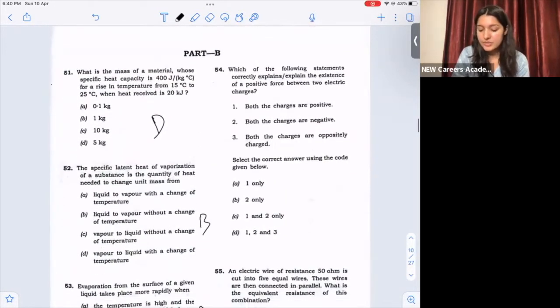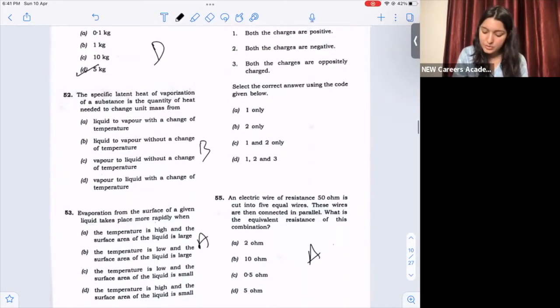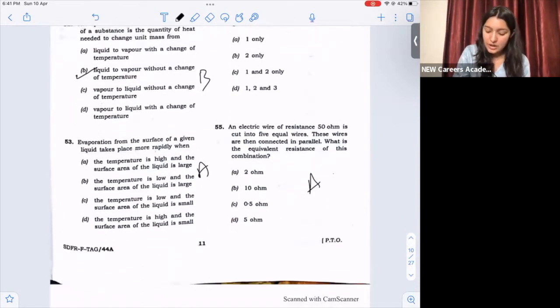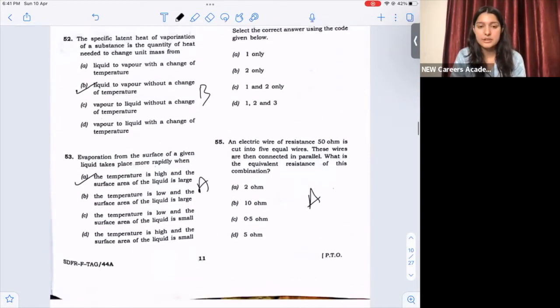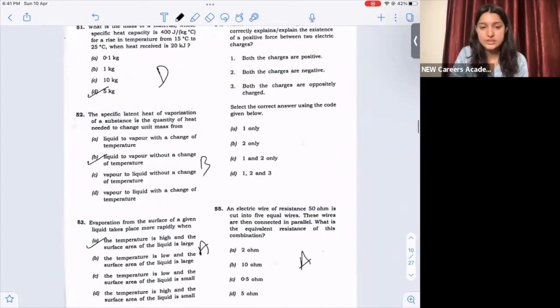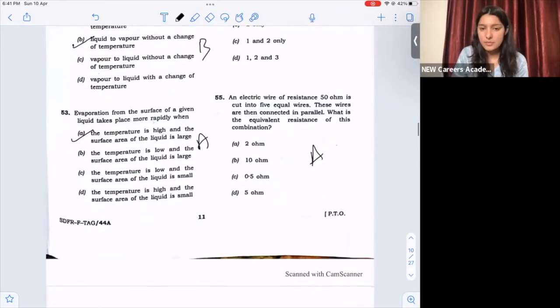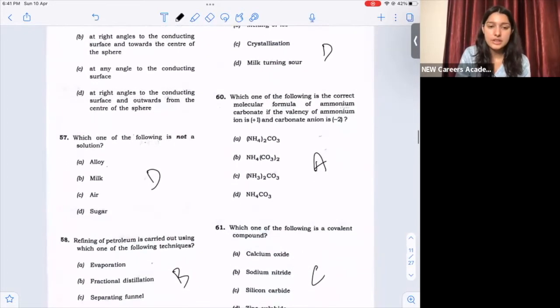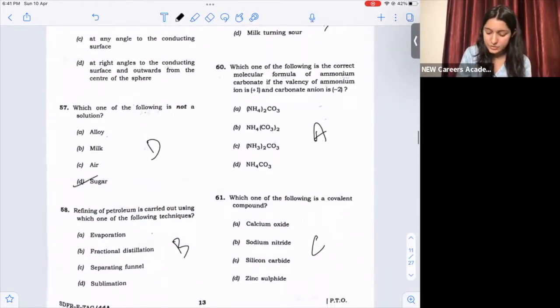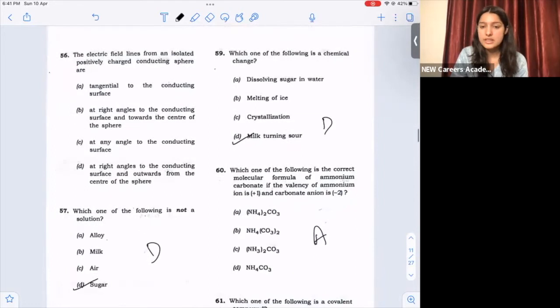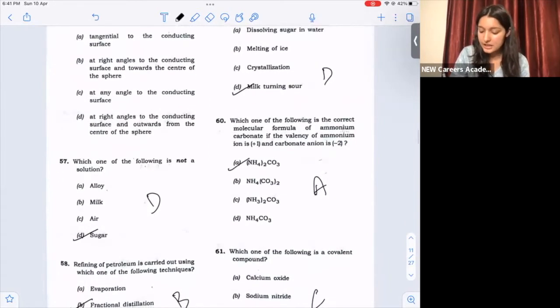Part 2. First 50 questions are science questions. So 51, option D, 5 kg. 52, option B, liquid to vapor without a change of temperature. 53, option A, the temperature is high and the surface area of the liquid is large. 54, this question is doubtful. Next, 55, option A, 2 of them. 56, 57, which one of the following is not a solution, option D, sugar. 58, B, fractional distillation. 59, D, bilge turning, soar. 60, option A, ammonium carbonate.